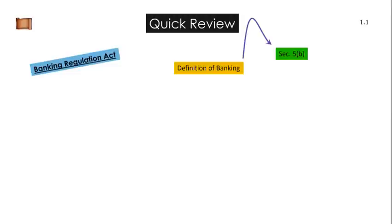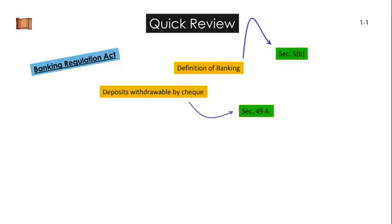In the last two videos, hamne Banking Regulation Act cover ki. We saw the definition of banking — it was covered in Section 5b. An organization or institution that accepts deposits for the purpose of investment or lending, and these deposits must be withdrawable on demand through check, draft, order or otherwise. These deposits must be withdrawable by check — this clause was provided for in Section 49a of the Banking Regulation Act.